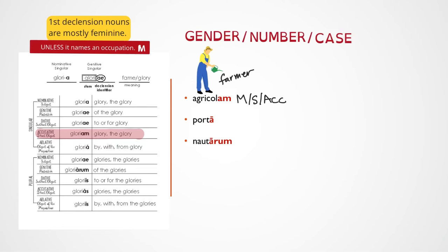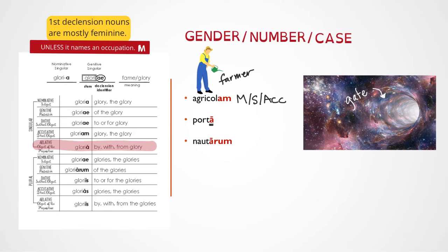Let's try porta. We see the ending there — that A with that little line above it, that's called a macron. Paying attention to that line is important because it's a little piece of code that shows us the difference between this ending and the nominative singular. If you look at first declension endings, they're pretty similar. It's just that little macron that tells them apart. Let's check the meaning of this word. Porta just means gate. Gate is not a job, so that means that porta is going to be feminine. Checking that A with the macron above it on our key, we see that it's going to be singular and oblative. So feminine, singular, oblative.